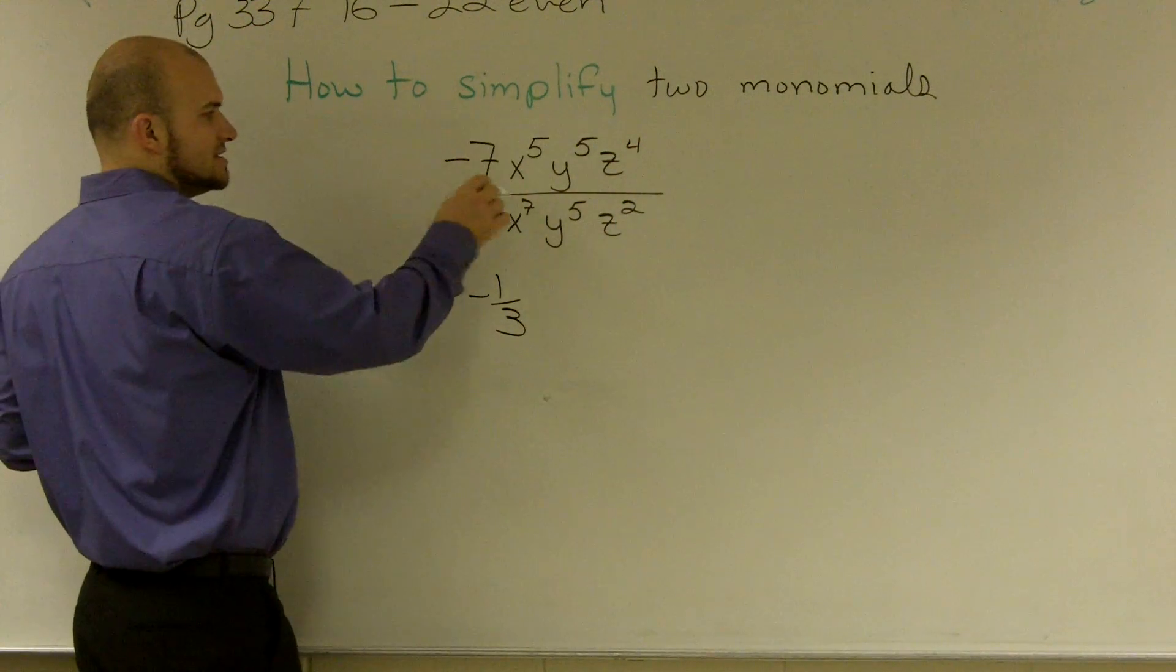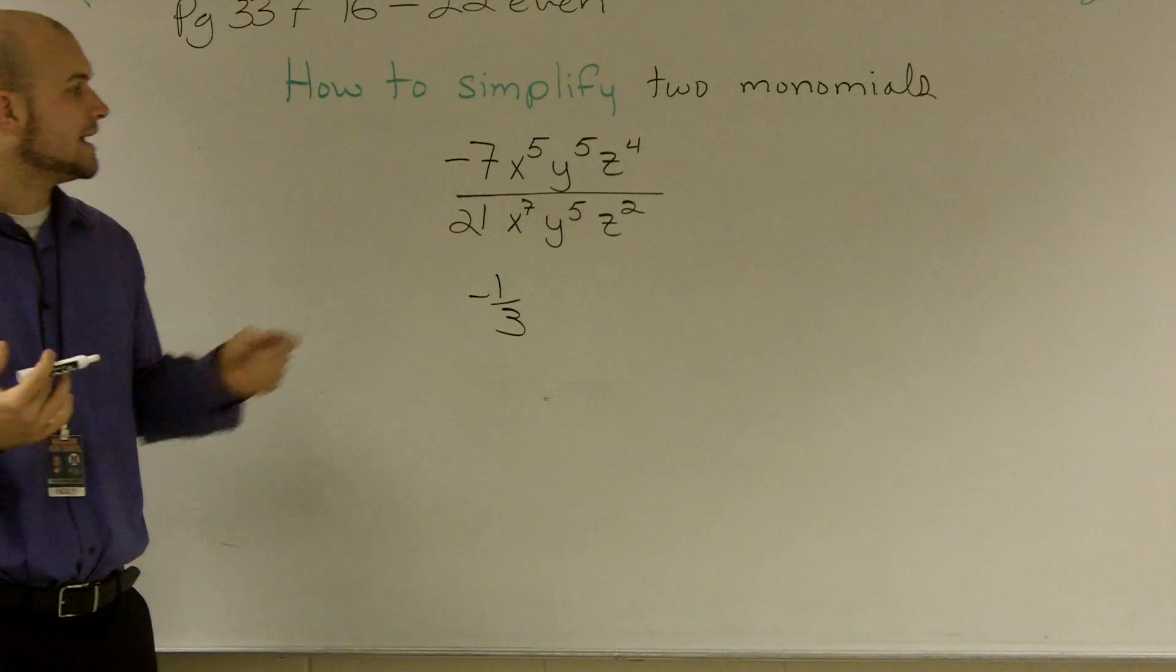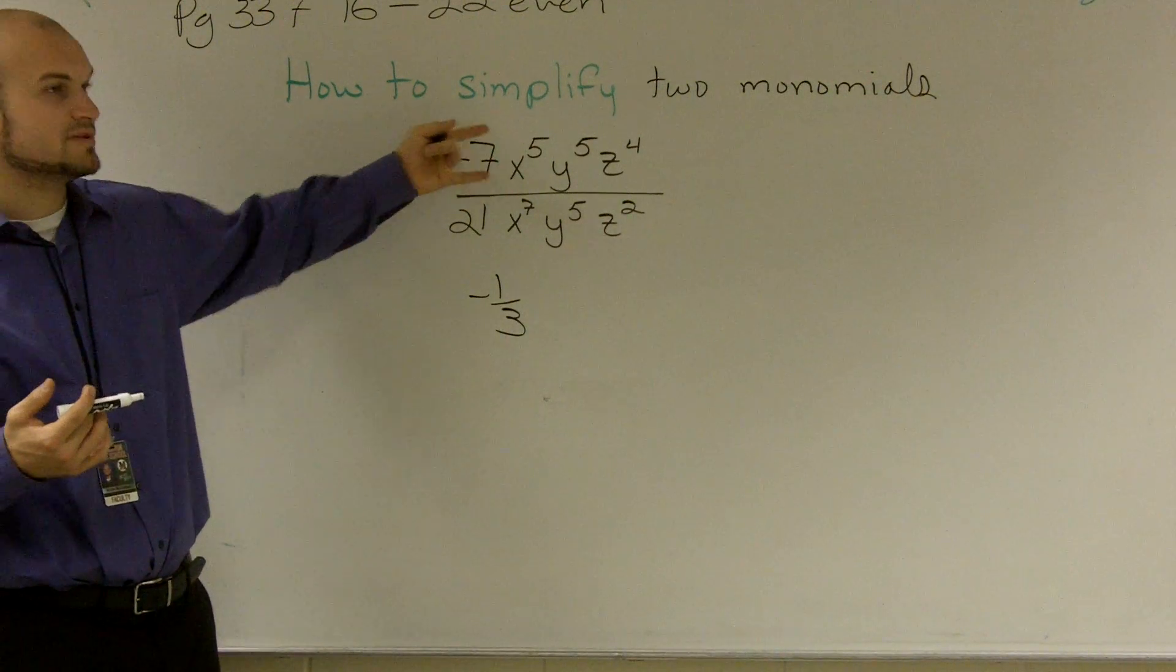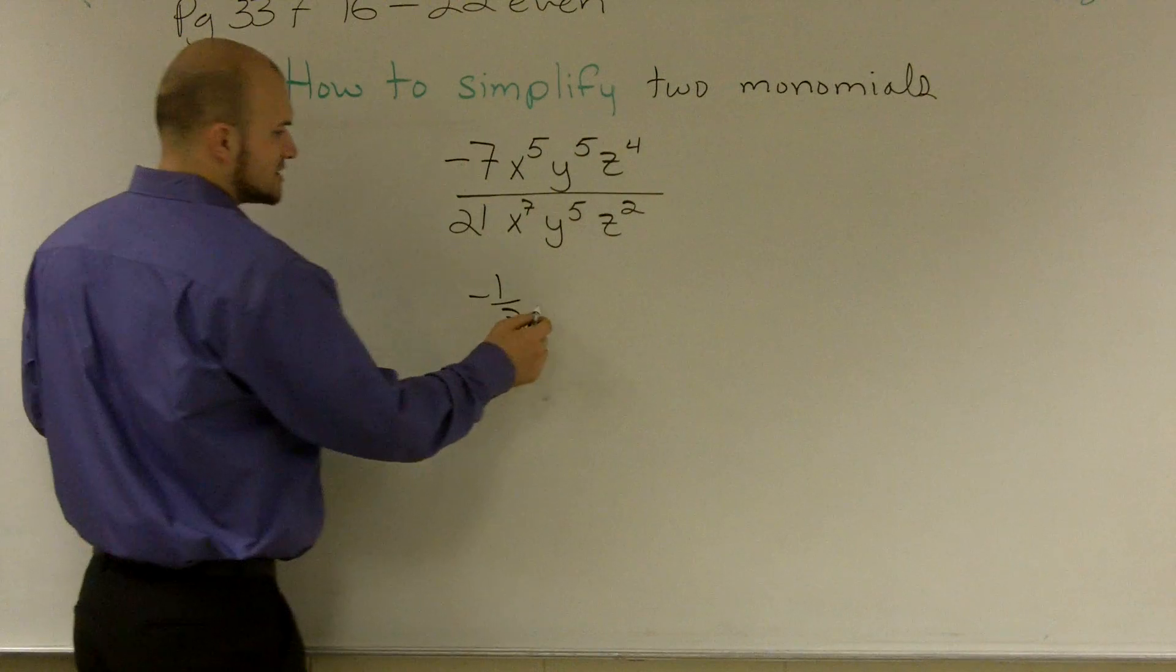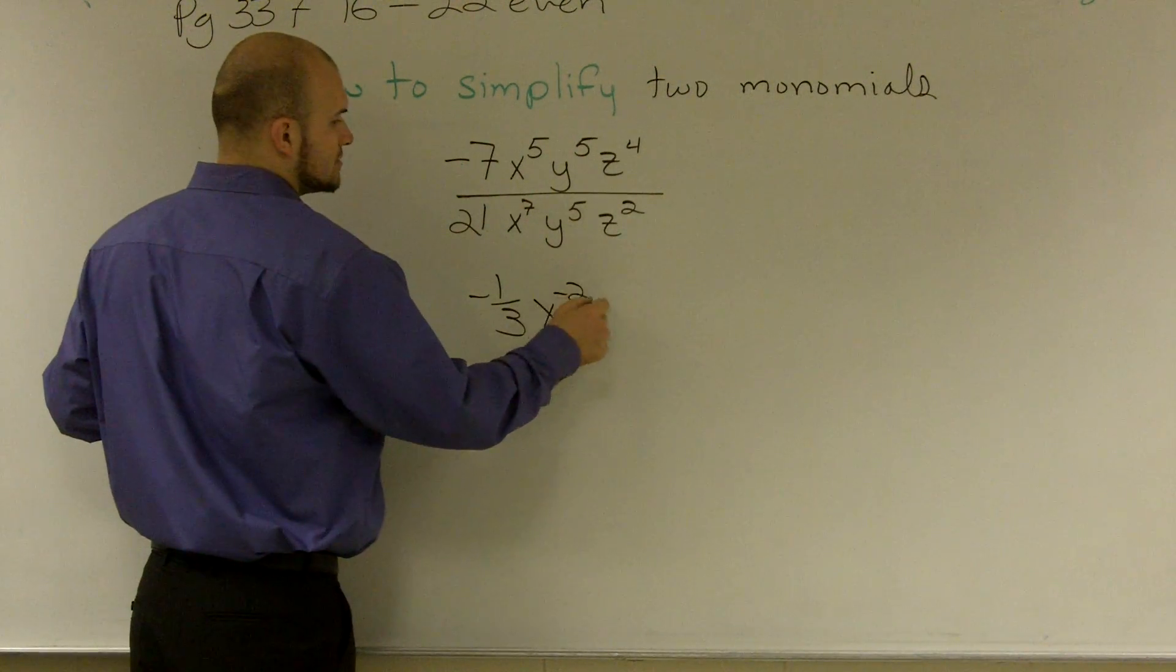Then I have x to the 5th divided by x to the 7th. I know when I have exponents and I'm dividing them, then I'm going to subtract the exponents. So it's going to be x to the negative 2.